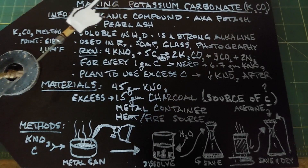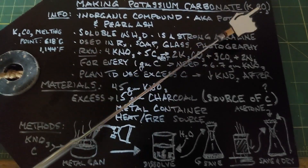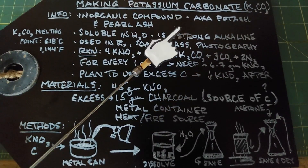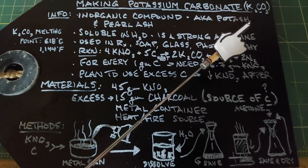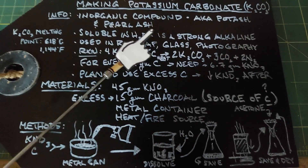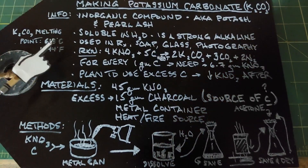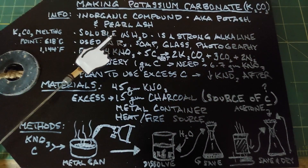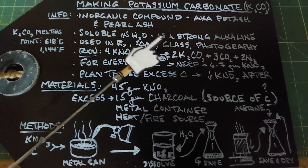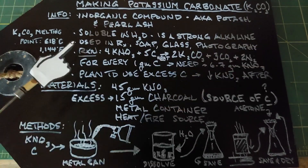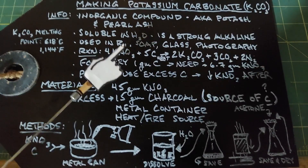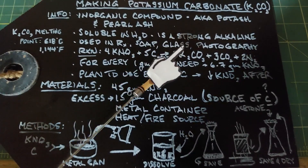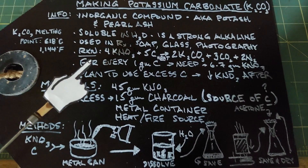This video is going to cover making potassium carbonate, or K₂CO₃. It's an inorganic compound also known as potash and pearl ash. Its melting point is 618°C or 1144°F. It's soluble in water and in solution it is strongly alkaline. It's often used in prescriptions, soap making, glass, and photography.